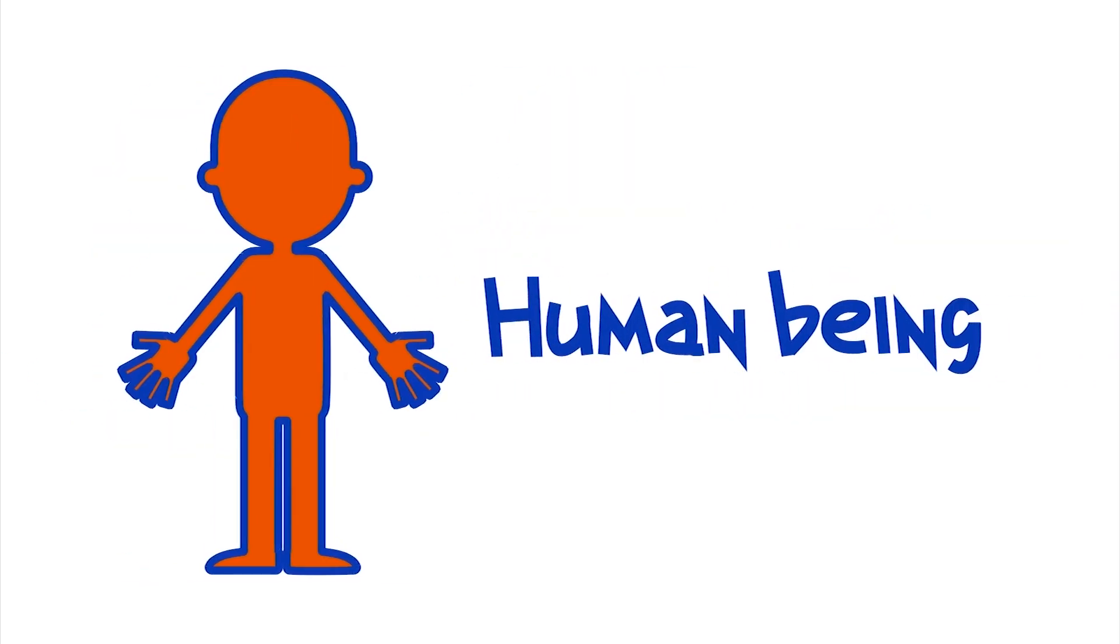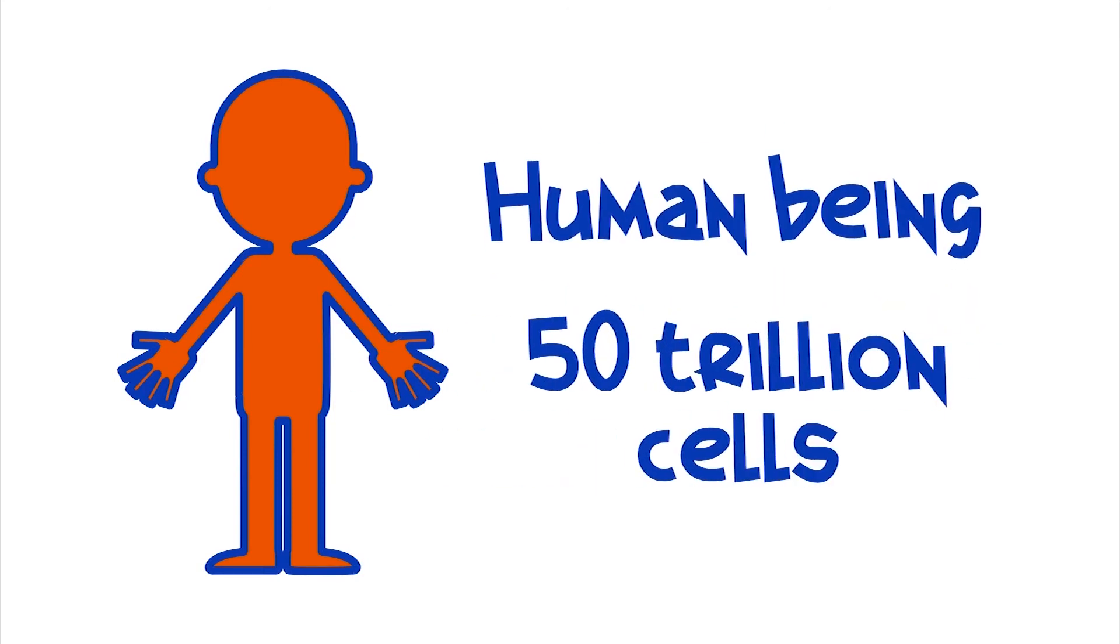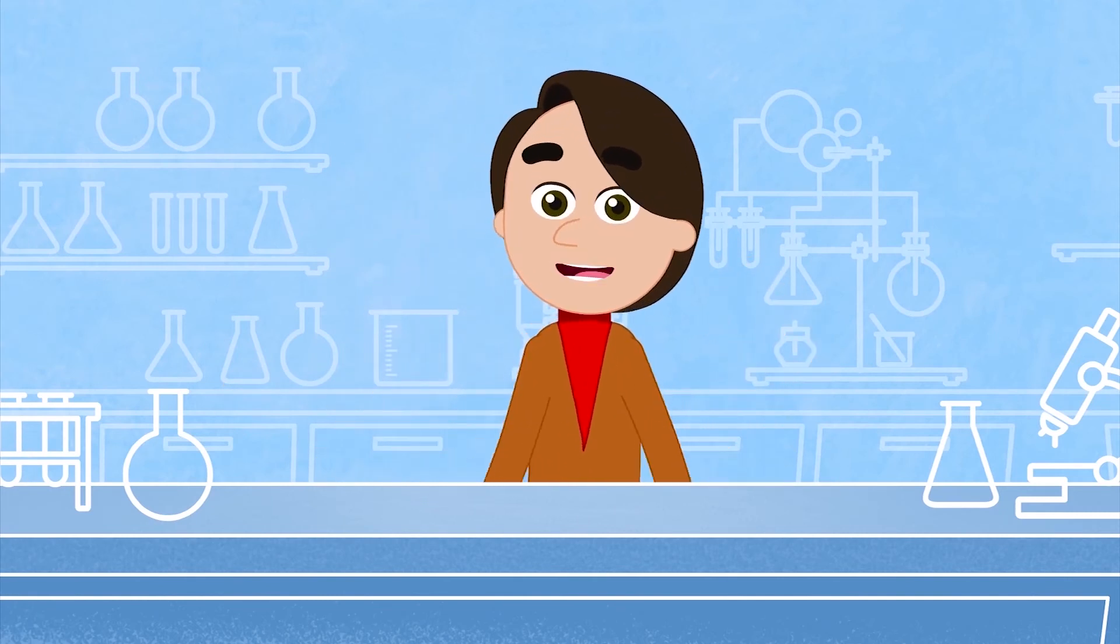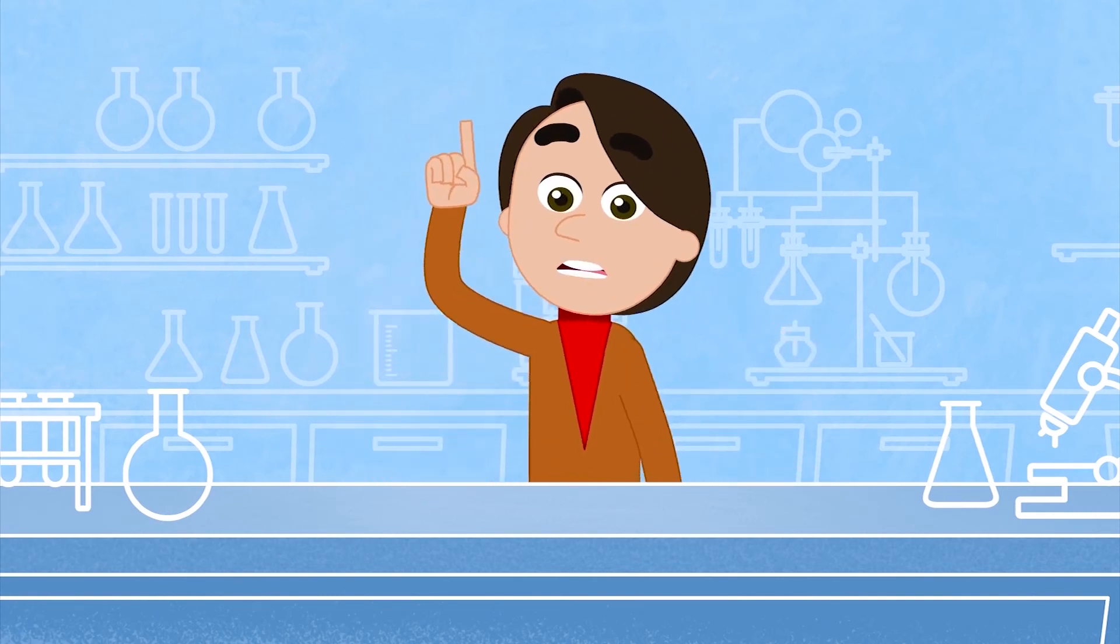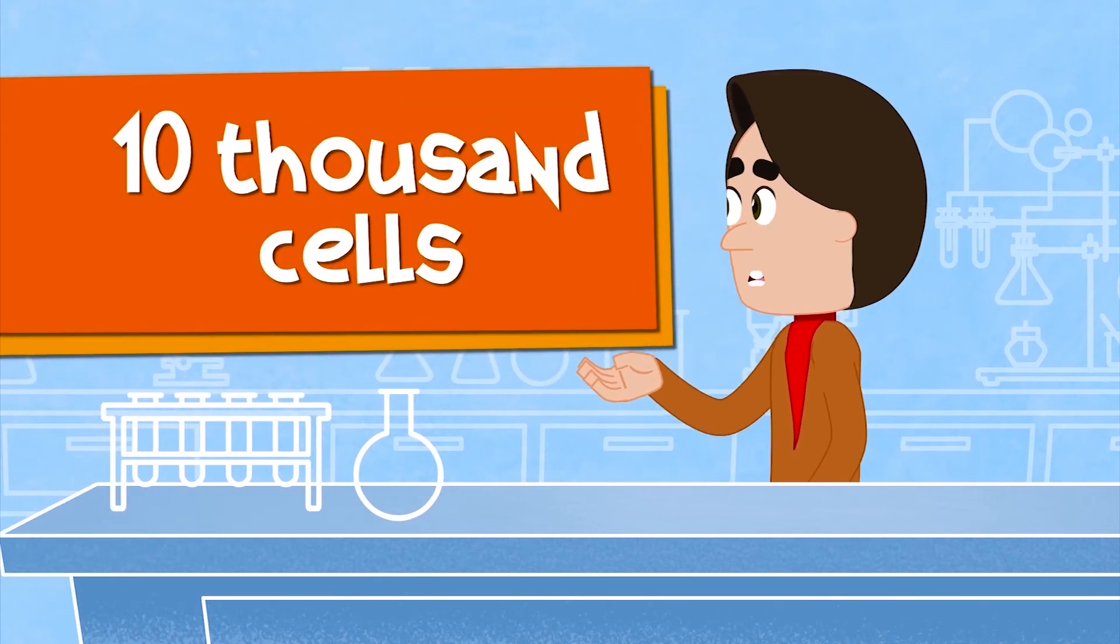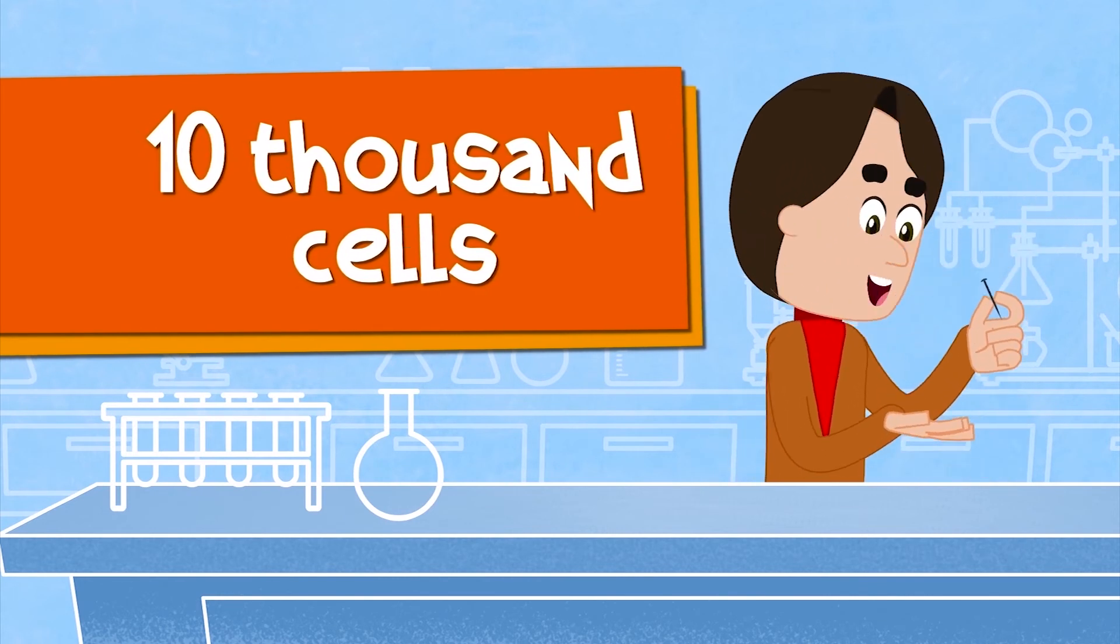We humans have more than 50 trillion cells in our body. Wow! Too many cells, huh? But they are very small. To have an idea, you can put 10,000 cells on the head of a pin.